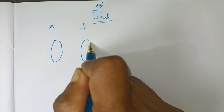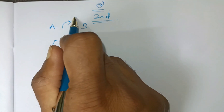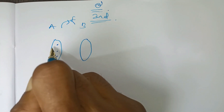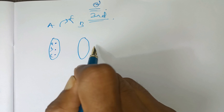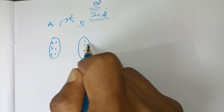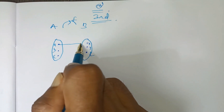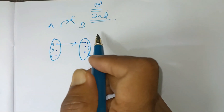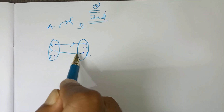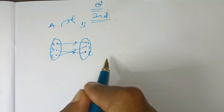This is set A and this is set B, and there is a mapping F from set A to set B. There are three points here: A, B, C, and suppose there are three points here: X, Y, Z. Let X be the image of point A, Z be the image of point B, and Y be the image of point C.